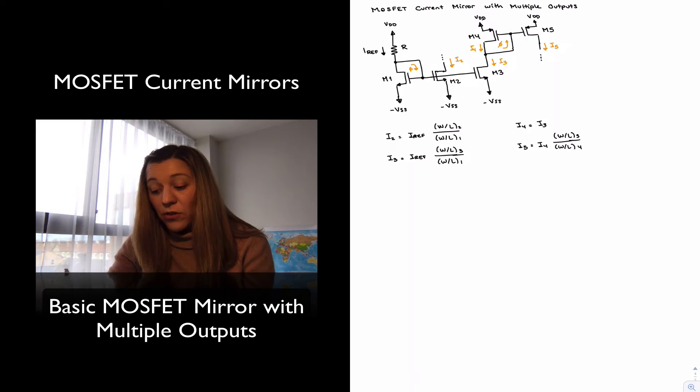Now, there are some conditions that need to be met in order for the circuit to operate as intended. For one thing, we need for all of those transistors to be in saturation.